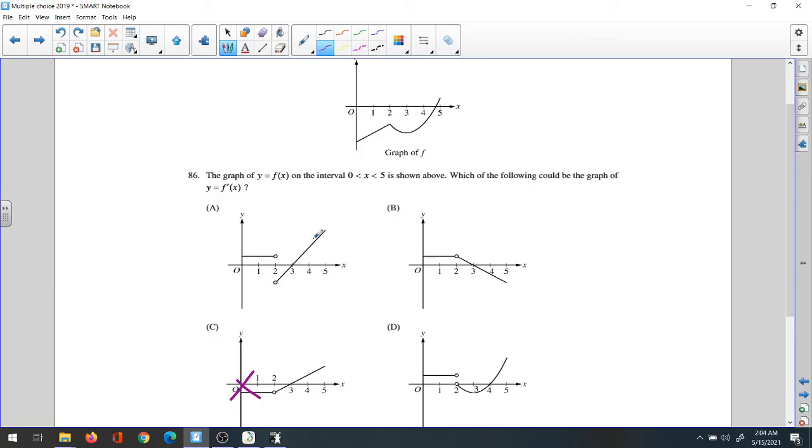So the function that must be considered is A. I'll tell you why. If you graph slope in here, slope, slope, slope, from 2 till 4, slope, slope, slope.